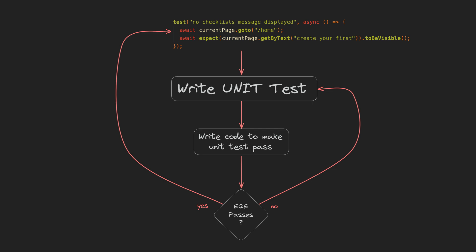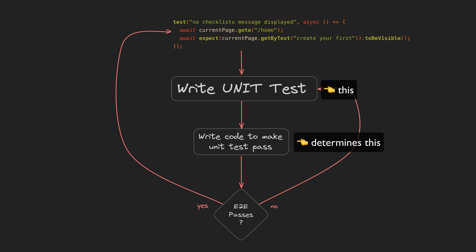If you want, you can just write end-to-end tests and write code to satisfy those tests. But for me, the part where the end-to-end test initially fails is what determines the unit and integration tests I need to write. I write an end-to-end test to determine what unit test I need to write to get past the current error in the end-to-end test. I then write code to satisfy that unit test and check if the end-to-end test passes. If it doesn't, I write another unit test to get past the next hurdle, and so on until the end-to-end test passes. Usually I end up writing 5 to 10 unit and integration tests per end-to-end test.